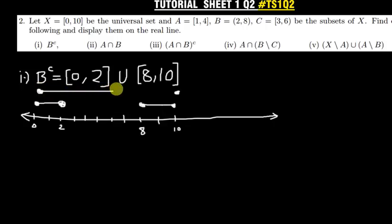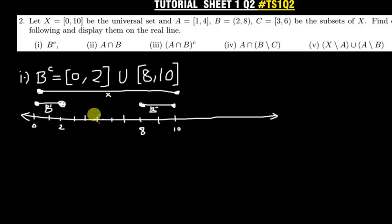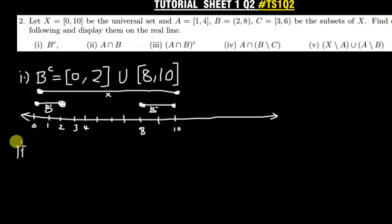We draw a straight line for X from zero to ten. Then we label the line for B complement, making sure to show which line represents B complement. Make sure you put all the necessary numbers on the real line. Now we quickly move on to the next question: finding A intersection B.